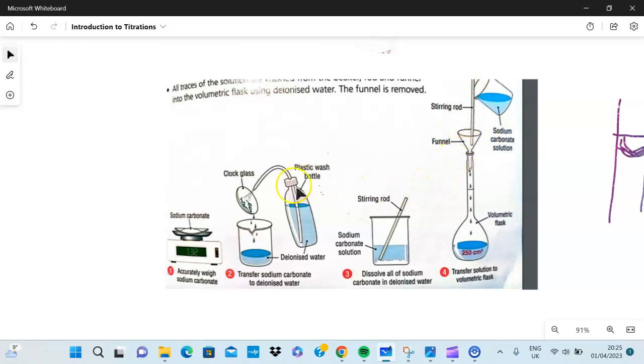Of course we add in more deionized water from this wash bottle to the beaker and add the rinsings down the funnel and rinse over again. Many people would say add in more deionized water, yes. You add more deionized water till about one centimeter cube below the graduation mark.